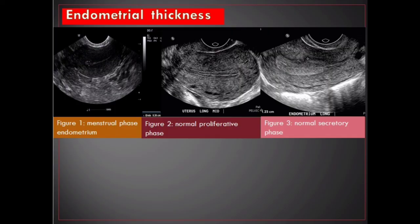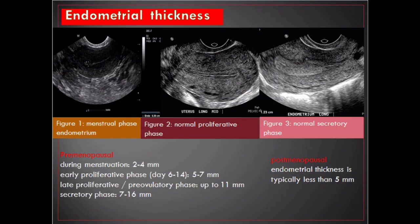In the secretory phase the endometrium is at its thickest — up to 16 millimeters — and becomes uniformly echogenic as the functional layer becomes edematous. Endometrial thickness in pre-menopausal patients: menstruation 2–4 millimeters, early proliferative phase 5–7 millimeters, late proliferative phase up to 11 millimeters, secretory phase 7–16 millimeters. Following dilatation and curettage or spontaneous abortion it is less than 5 millimeters; if thicker, consider retained products of conception. Post-menopausal endometrial thickness is typically less than 5 millimeters.